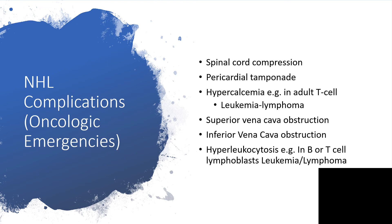Hypercalcemia is seen particularly in adult T-cell leukemia/lymphoma. Superior vena cava obstruction gives us superior vena cava syndrome, with distension of neck veins, swelling of the head and chest, inadequate cardiac output, weakness, tiredness, lethargy, and even cyanosis of the upper limbs. Vena cava obstruction may also lead to hepatomegaly, splenomegaly, peripheral edema, and leukocytosis — for example in B or T-cell lymphoblastic leukemia and lymphoma.